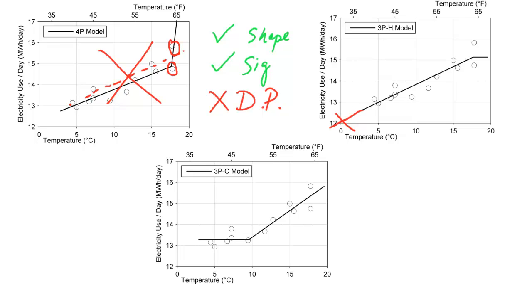And now what you'll see is that this one is going to pass. Does it pass the shape test? Yes, it does. Does it pass the significance test? Yes, it does. Does it pass the data population test? Yes, it does. It has 1, 2, 3, 4, 5, 6, 7 in that slope section. And so this is the model we would go ahead and use for this particular data set.